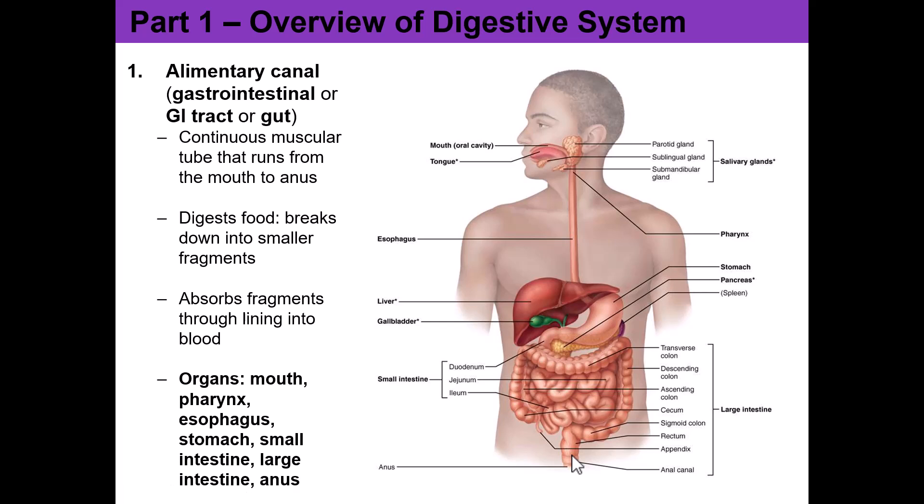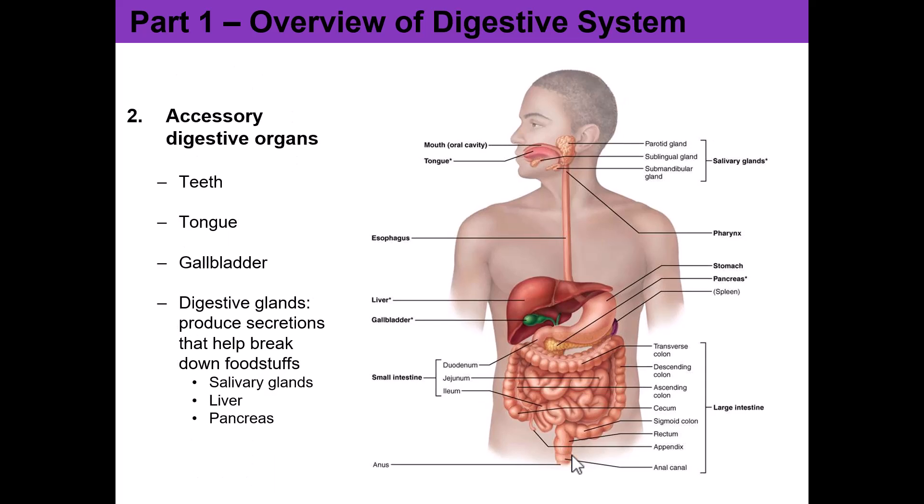Food is going in one way, and then whatever can't get digested is coming out the other end. But there are other organs involved in this process too — they're just not necessarily part of the pathway of food. These are the digestive accessory organs. Your teeth and your tongue are technically part of your mouth.